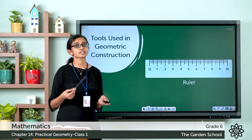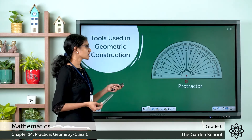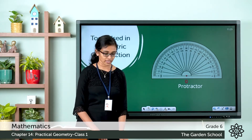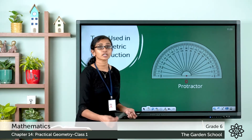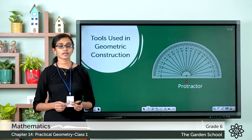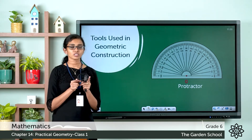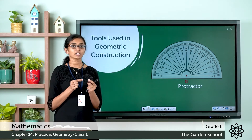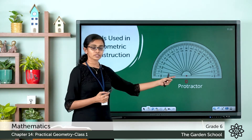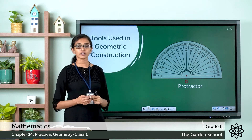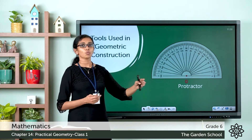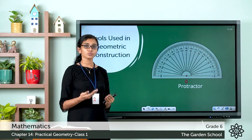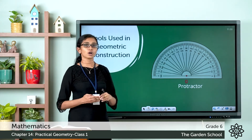Now let's see the next tool in a geometry box — it is a protractor. We have learned about angles and measuring and constructing angles with a protractor. It is a semicircular instrument with a baseline, and there are two sets of markings starting from 0 to 180 degrees. The two sets of markings are two scales: the inner scale and the outer scale.